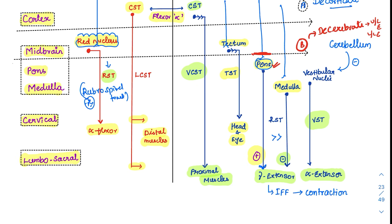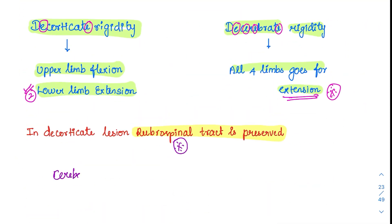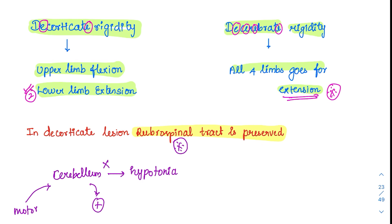One additional point: the vestibulospinal tract causes alpha extension. Whenever the cerebellum is cut — since the cerebellum was negatively influencing it — this extension becomes exaggerated, giving an exaggerated extensor response. Regarding cerebellum: whenever the cerebellum is cut, there is mild hypotonia. This is because impulses from the motor cortex were being enhanced by the cerebellum; when the cerebellum is absent, this initial enhancement is lost, causing slight hypotonia. The major point to remember remains the features of decorticate and decerebrate rigidity.